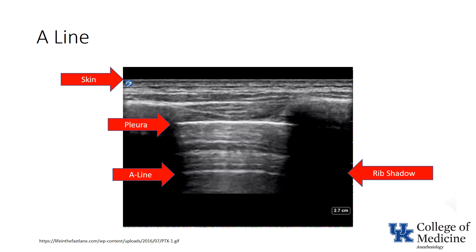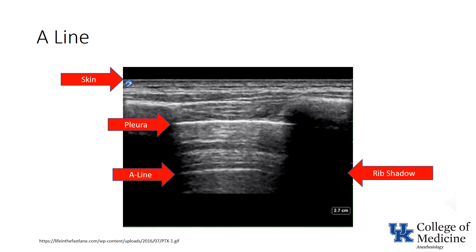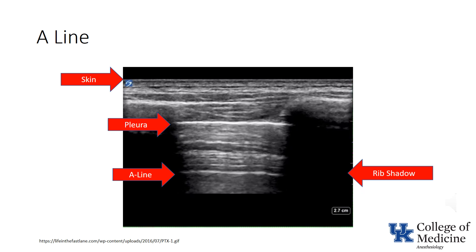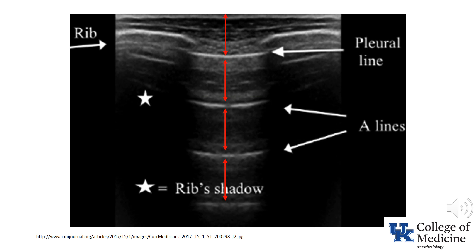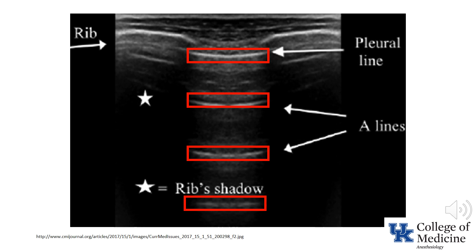This ultrasound demonstrates an A-line. As previously described, it is a reverberation artifact of the pleura, which appears as a horizontal line at a depth that is a multiple of the distance between the skin and the actual pleura. There are several characteristics of A-lines: first, they are identical in shape to the pleural line; second, they occur at regular intervals deep to the pleural line; and finally, the brightness is diminished with each replication.